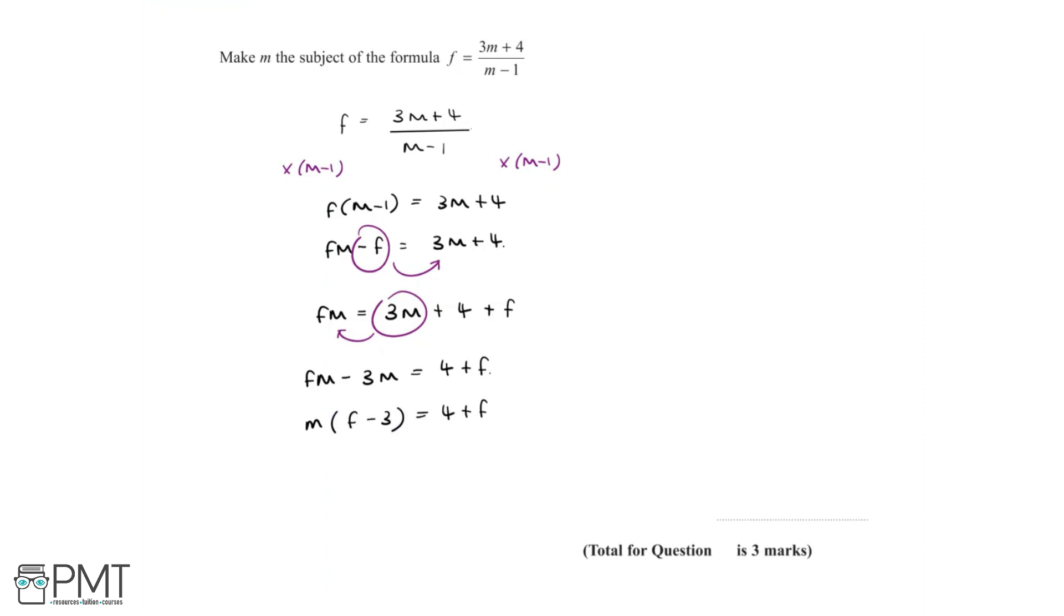Now to make m the subject, we need to divide both sides by f minus 3, which leaves us with a final answer that m is equal to 4 plus f divided by f minus 3.